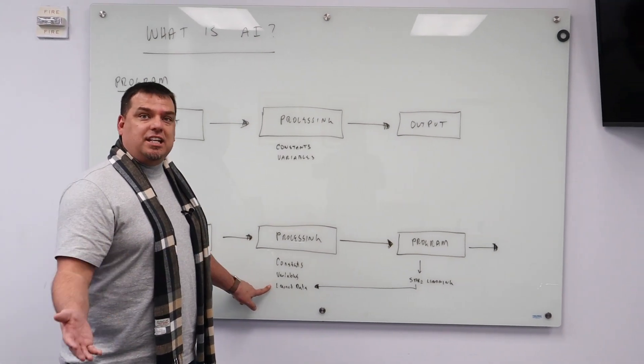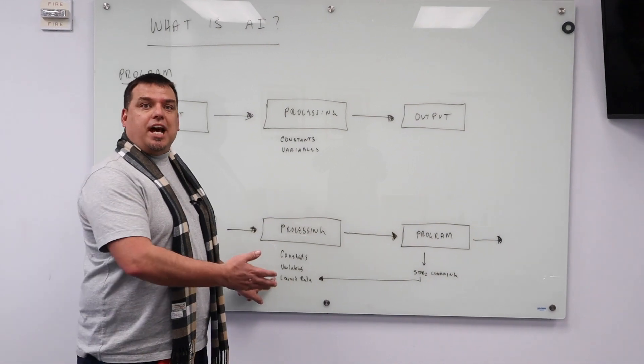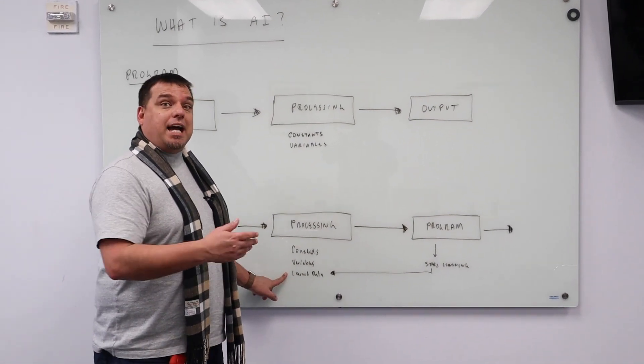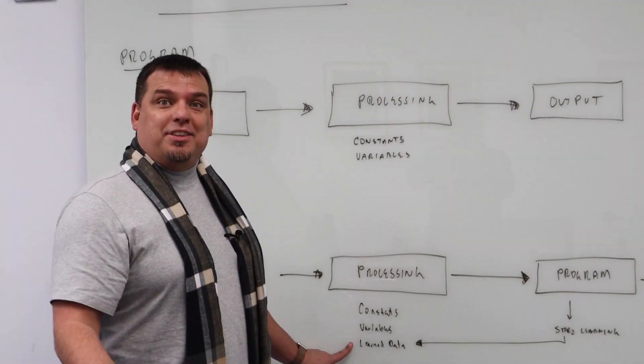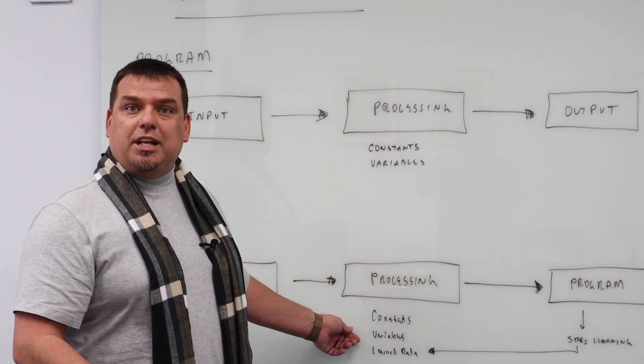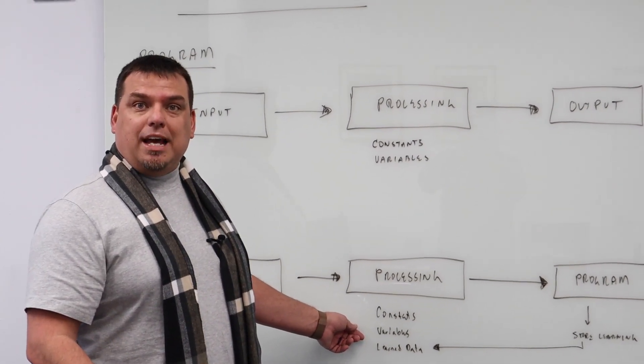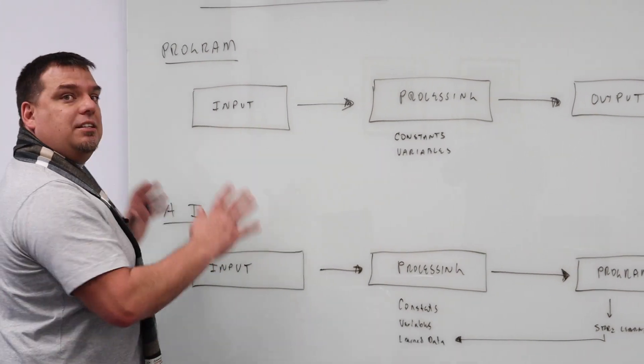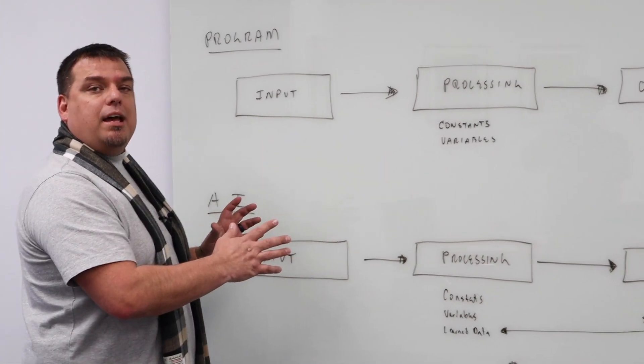That is, I know that at 18 milliamps output, I should expect to see this flow. Maybe I have 18 milliamps output the next pass through, but I see a different flow output. So I'm going to learn from the other variables that I'm consuming in that processing. That is ultimately the difference between a regular program and AI.